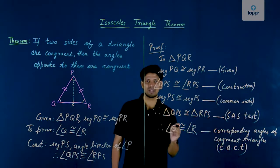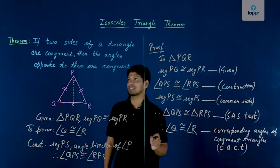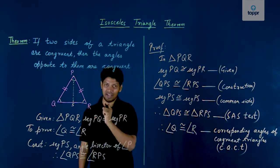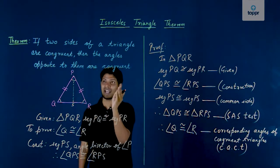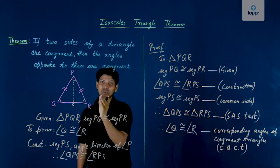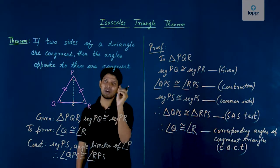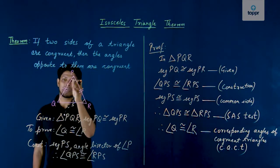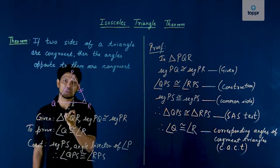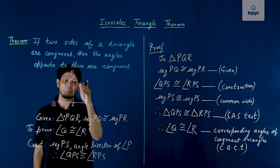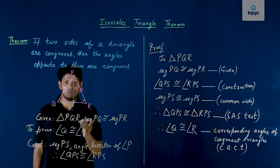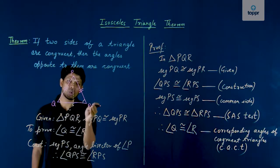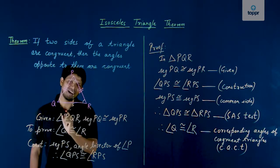Hence the theorem is proved: if two sides of a triangle are congruent, then the angles opposite to them are congruent. We started with PQ congruent to PR, and we proved that angle Q is congruent to angle R.